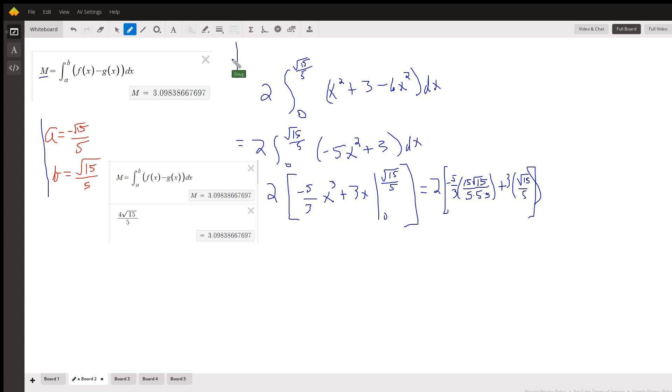Since the area is the same on the left side of the x-axis as it is on the right side, we can go from 0 to b and double it. I've shown the work here down to this point.